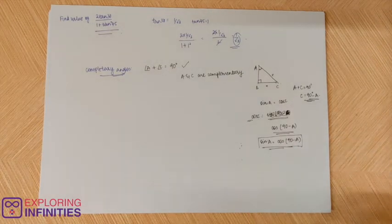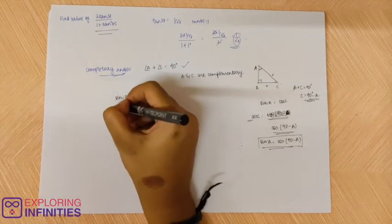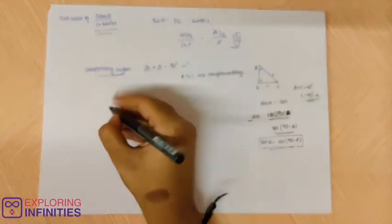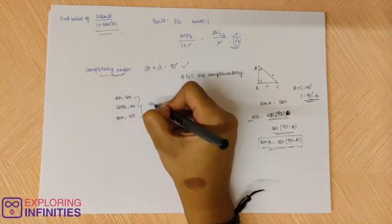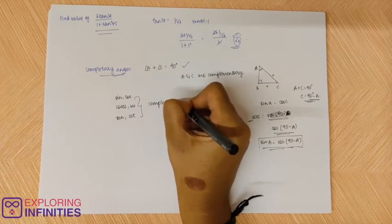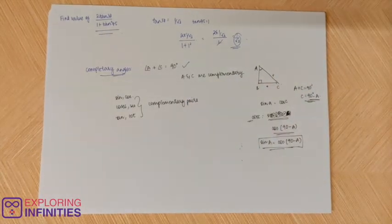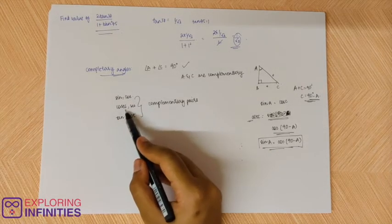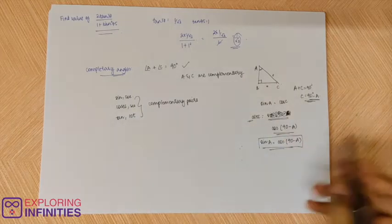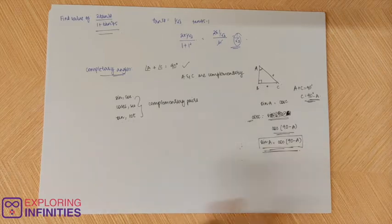Just like that when you look at the other values also you can say that sine comma cos, cosecant comma secant, tan comma cot. What does that mean? It means that sin of 90 minus theta is cos. Secant of 90 minus theta is cosecant. Tan of 90 minus theta is cot theta. So if there is a question then always look towards making this angle complementary. I will just show it with an example.